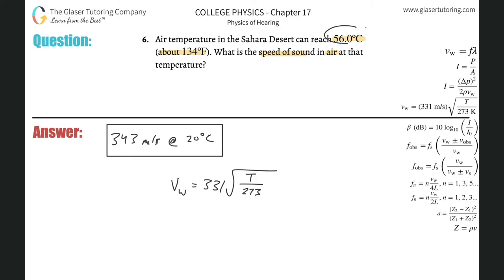Now what did they do? They gave us Celsius. But you know to convert from Celsius to Kelvin is simple, you're just going to add 273. So let's do that. This is 331 multiplied by the square root of 56 plus 273, that would be the Kelvin temperature, divided by 273.